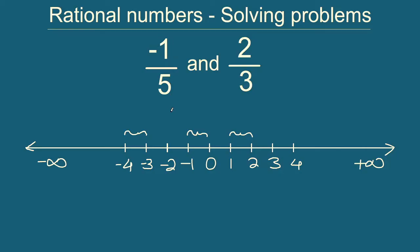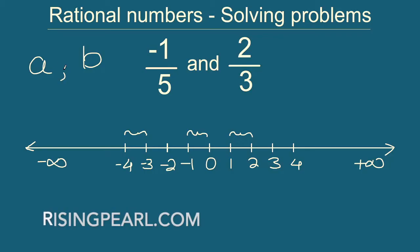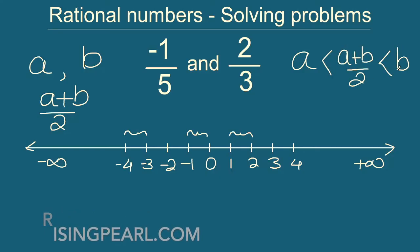So minus 1 over 5 will be somewhere on the number line, and similarly 2 divided by 5 will be somewhere on the number line. So we will be able to find potentially an infinite number of rational numbers; we just need to find 5 in our example. One of the easiest ways is to take the average of the two numbers. If one rational number is A and the second is B, the arithmetic mean is simply A plus B divided by 2, and the arithmetic mean lies exactly in the middle of the two numbers. So if we simply take the average we will get the midpoint between the two numbers, and we can keep doing that.